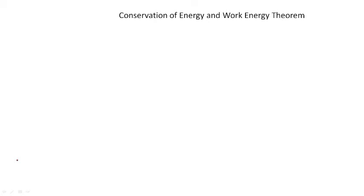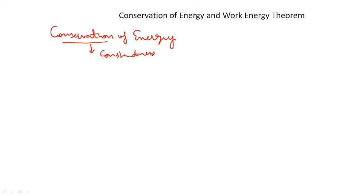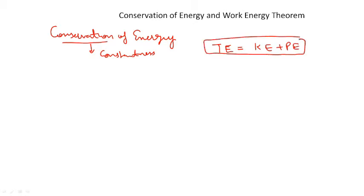Hello everyone, today we will discuss the conservation of energy and the work-energy theorem. Conservation means constantness — if a dynamical system moves from one point to another, its total energy remains constant. We can write this as: total energy equals kinetic energy plus potential energy. This is the law of conservation of energy.